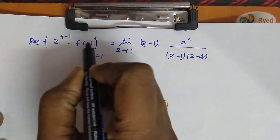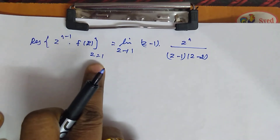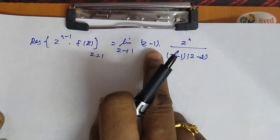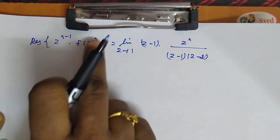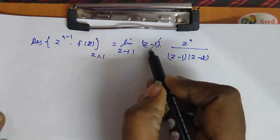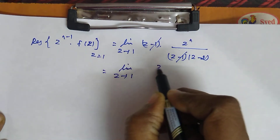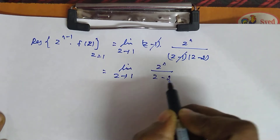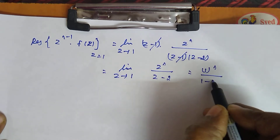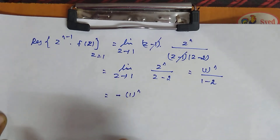Now we find the residue at each pole. The residue of z^(n-1) F(z) at z = 1 is: lim(z→1) (z−1) · z^n / [(z−1)(z−2)]. Cancelling (z−1), we get lim(z→1) z^n / (z−2) = 1^n / (1−2) = 1/(−1) = −1. So the first residue is −1, or equivalently (−1)^n.